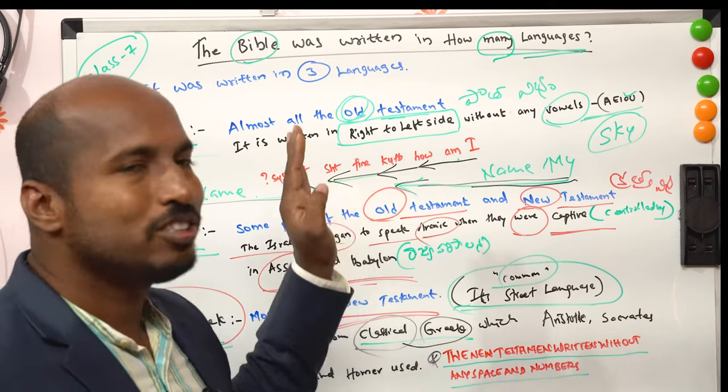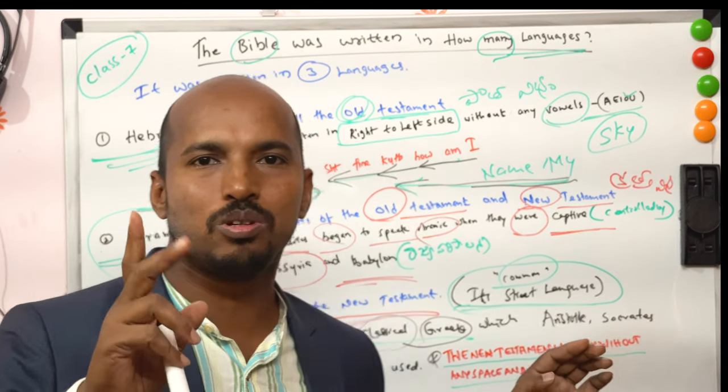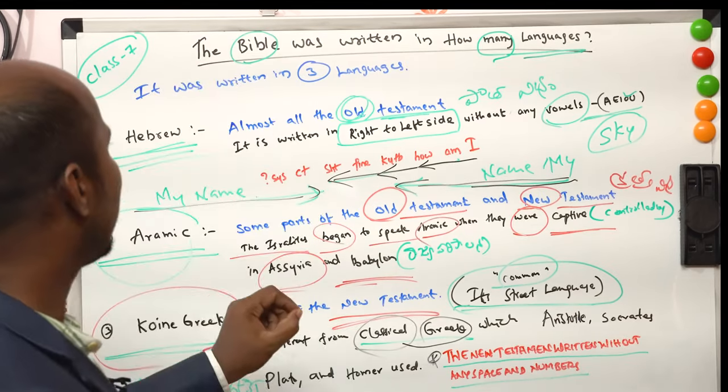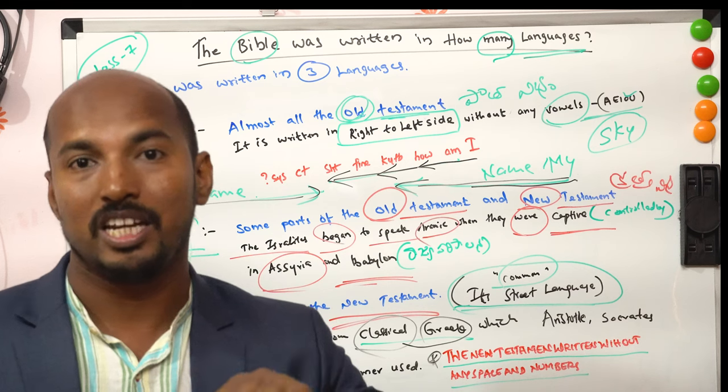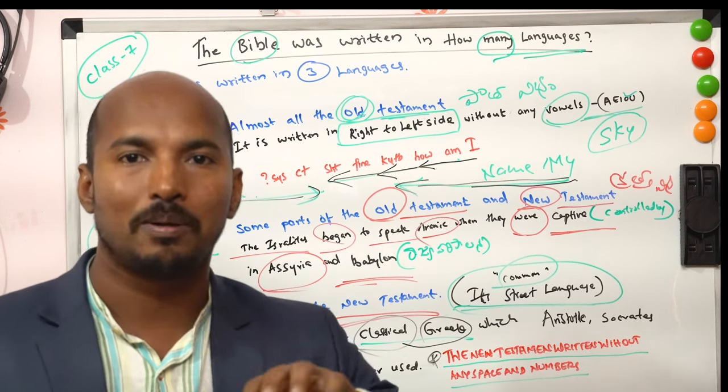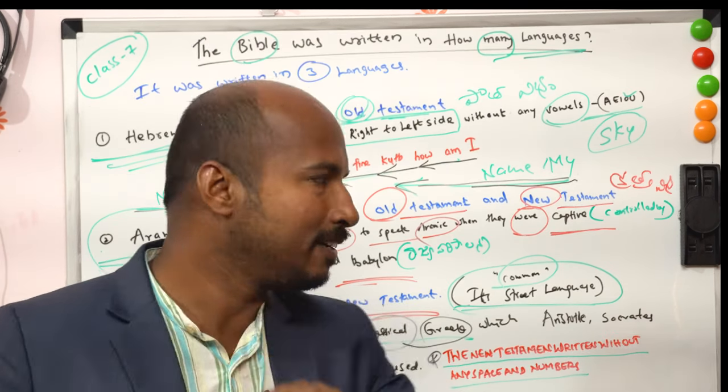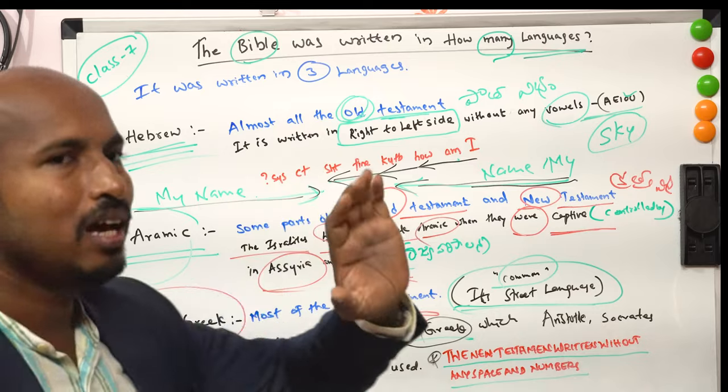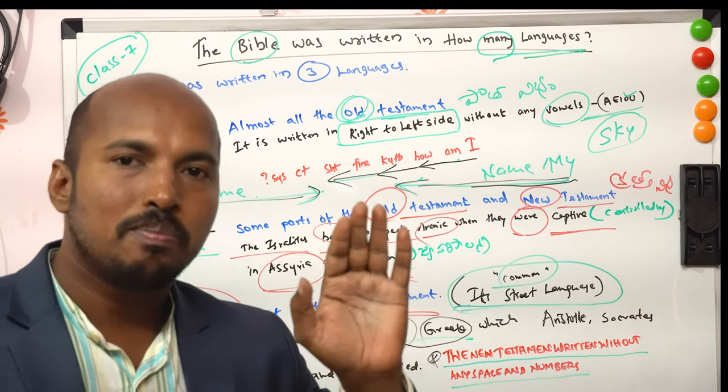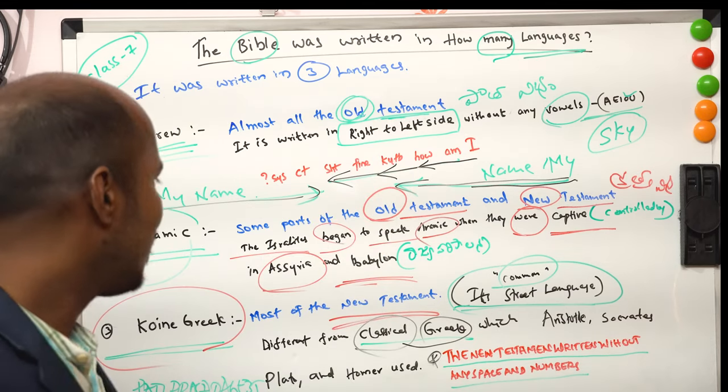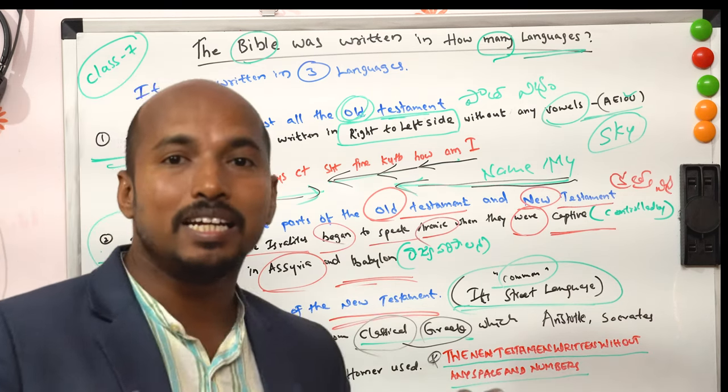This is what I am going to read today. What are the take-away points? In how many languages the Bible was written? It was written in three languages. What are they? Hebrew, Aramaic, Greek. Hebrew, Aramaic, Greek.